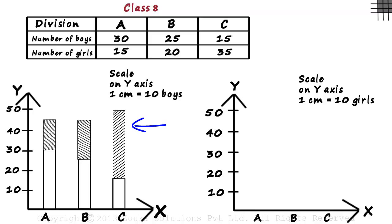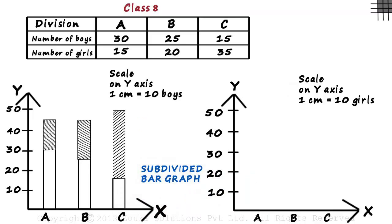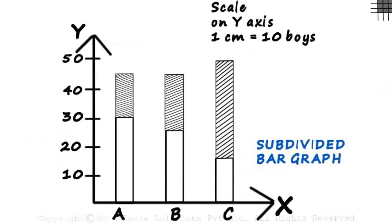These kinds of graphs are called subdivided bar graphs. How is this different from the joint bar graphs? We can see that this graph also tells us the total number of students in each division.